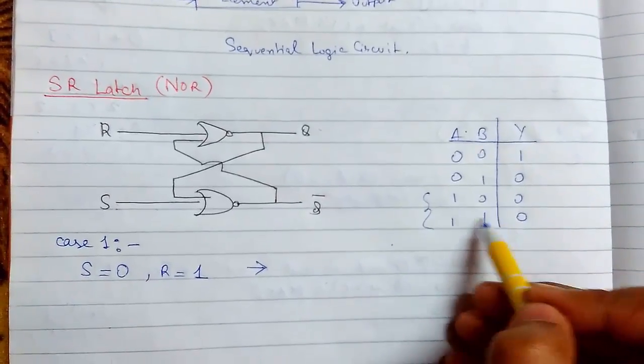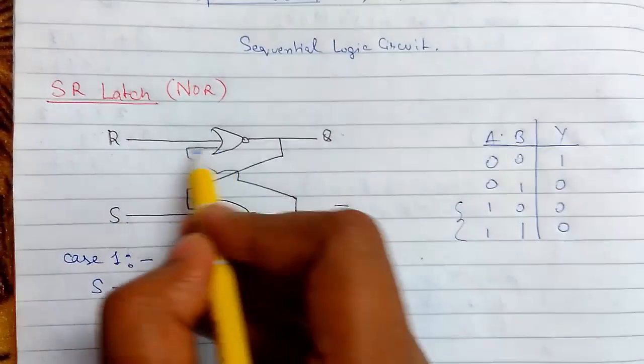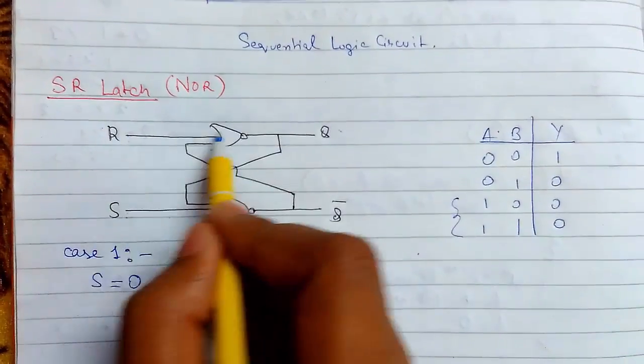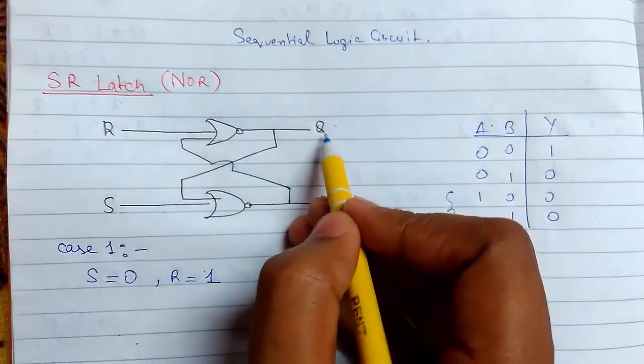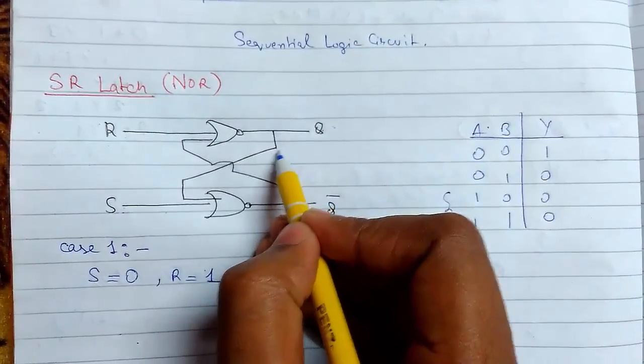So if S is 0 and R is 1, so this will be 0 and 0 gets passed from here.